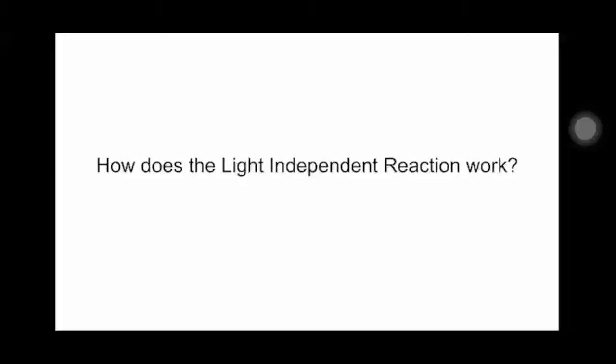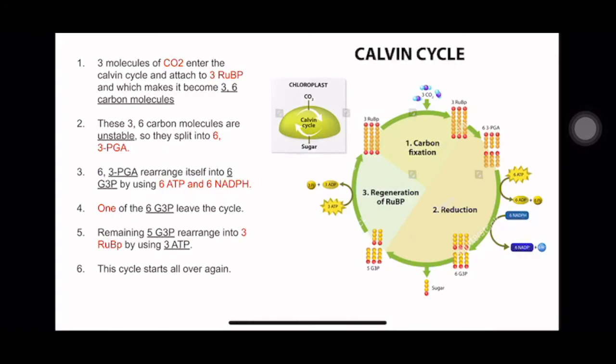How does the light independent reaction work? First, 3 molecules of carbon dioxide enter the Calvin cycle and attach to 3 RuBP. At first, each RuBP chain has 5 carbon molecules. So after carbon dioxide attaches to each chain, it will then have 6 carbon molecules. When 6 carbon molecules stay together, it is unstable so it splits into 3. We first have 3 RuBP. So after we split, we will have 6 chains. And now we call it 6 3-PGA. 6 means 6 chains and 3 means each chain has 3 carbon molecules.